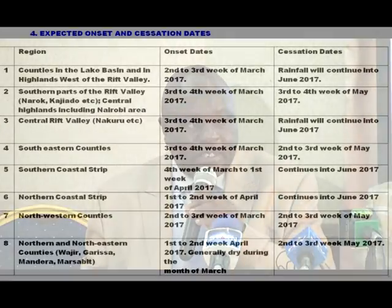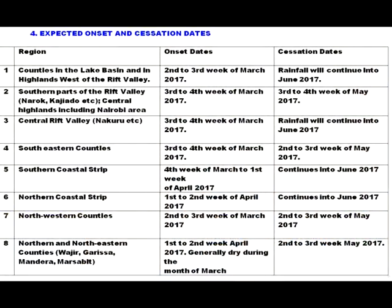A table shows the expected onset and transition dates. Counties in the Lake Basin and the highlands west of the Rift Valley are likely to get their onsets in the second and third week of March 2017, with rainfall continuing into June 2017. In southern parts of the Rift Valley — Narok and Kajiado — the central highlands including the Nairobi area, an onset is expected in the third to fourth week of March 2017, with cessation in the third to fourth week of May 2017.